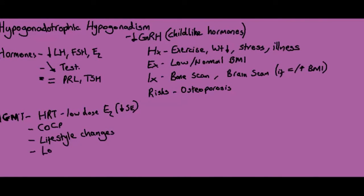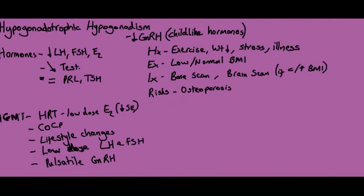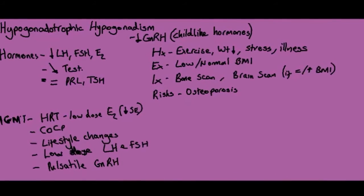For management if the woman does not want to become pregnant, options are hormone replacement therapy — low dose oestrogen with lower side effects — or the combined oral contraceptive pill. If she does want to become pregnant, recommend lifestyle changes: reduce intense exercise, stop restrictive dieting, to try and increase BMI. You could also give low dose LH and FSH to stimulate the ovaries, or pulsatile GnRH to stimulate ovarian production again.